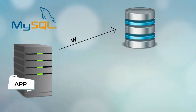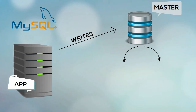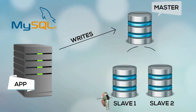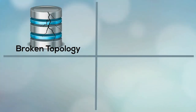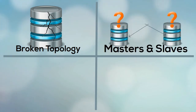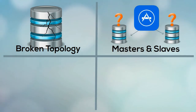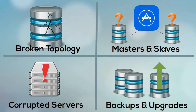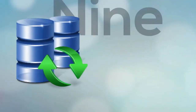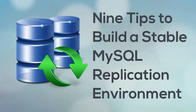MySQL Replication is the native way of bringing high availability to a MySQL database infrastructure. It's simple for the DBA to set up, but building the stack and maintaining the environment can be a challenge — not just setting up replication between a master and some slave servers, but also restoring broken topologies, tracking the writable master and read-only slaves, handling corruption, performing backups and version upgrades, and more. This video will talk about 9 tips to ensure you build a stable MySQL Replication environment.